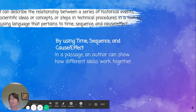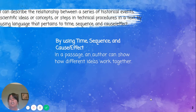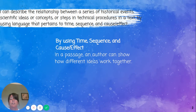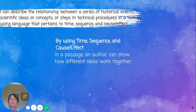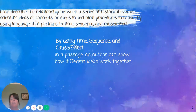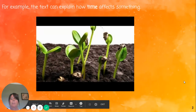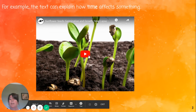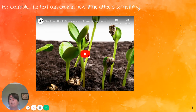I can describe the relationship between a series of historical events, scientific ideas or concepts, or steps in technical procedures in a text by using language that pertains to time, sequence, and cause and effect. By using time, sequence, and cause and effect in a passage, an author can show how different ideas work together. Let's check out this video.